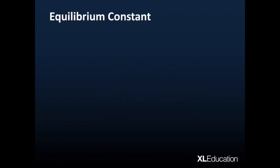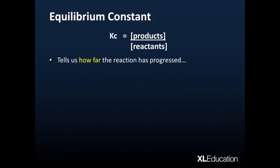What is the equilibrium constant? Well, Kc is often described as the concentration of products over the concentration of reactants. Now, this is an informal way of describing it, but it is very helpful. And essentially, in a broader understanding, Kc tells us how far the reaction has progressed.